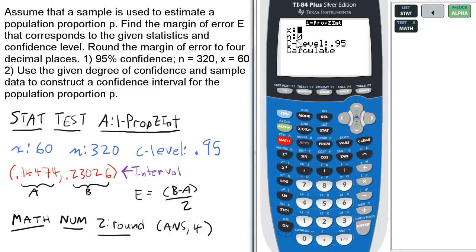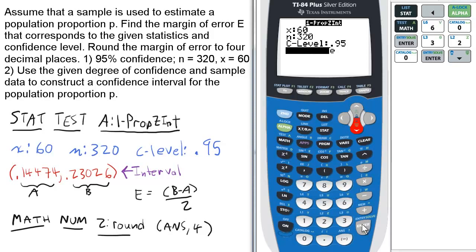We're going to enter the data as given, so x is 60, n is 320, and the confidence level is 0.95. You can either press enter or scroll down to calculate and press enter.